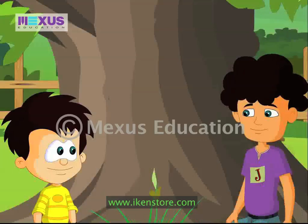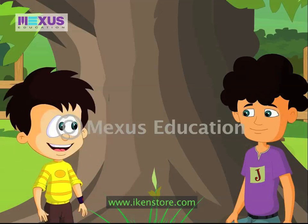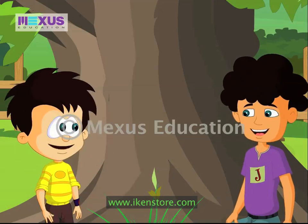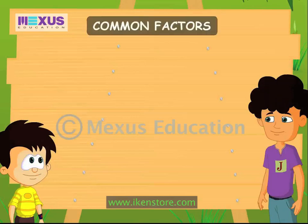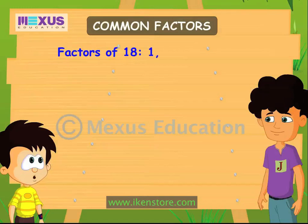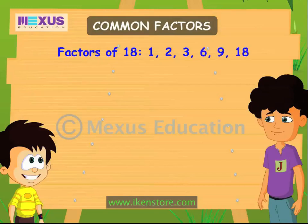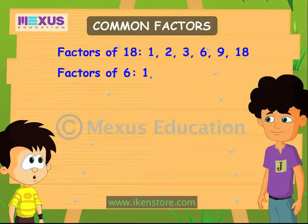But how? First, let's factorize the length of the three logs. The factors of 18 are 1, 2, 3, 6, 9, and 18. The factors of 6 are 1, 2, 3, and 6.